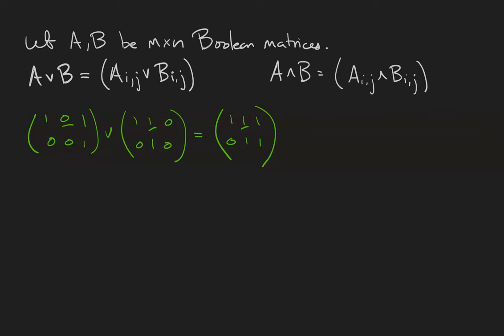The matrix A meet B is similarly constructed by taking the meets of the respective entries. So the matrix 1 0 1 1 meet the matrix 1 0 0 1 is equal to the matrix 1 0 0 1, because 1 meet 1 is 1, 1 meet 0 is 0, etc.